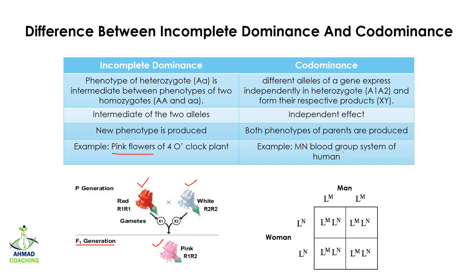In case of co-dominance, the example is the MN blood group system. When an M blood group man and an N blood group woman marry, their offspring have blood group MN. That was all about the difference between incomplete dominance and co-dominance.